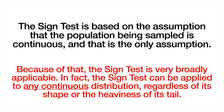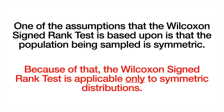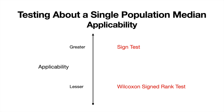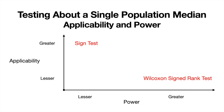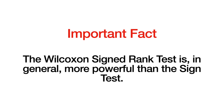We can also apply the sign test to symmetric distributions. When distributions are symmetric, we can also apply the Wilcoxon signed rank test. The Wilcoxon signed rank test has built into its development the assumption that the population is symmetric, so its application is limited to symmetric distributions. However, when it is applicable, the Wilcoxon signed rank test is in general more powerful than the sign test, and therefore would be preferable.